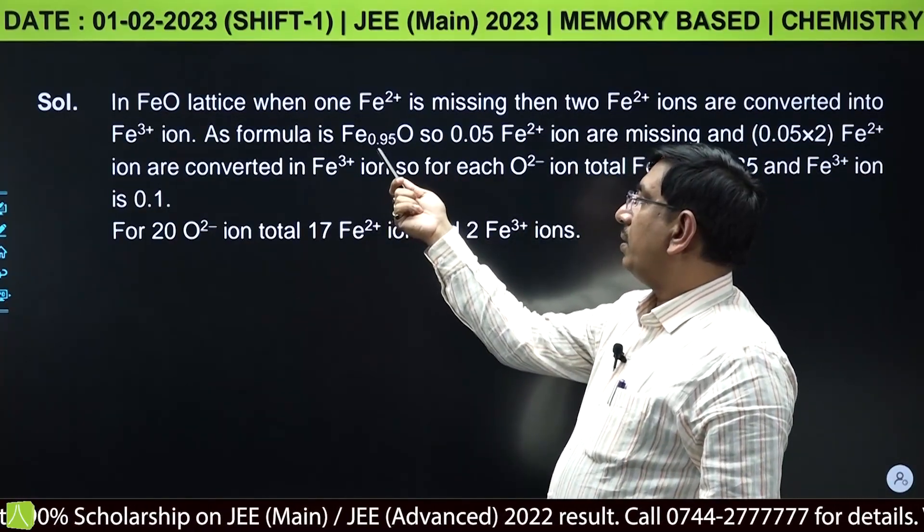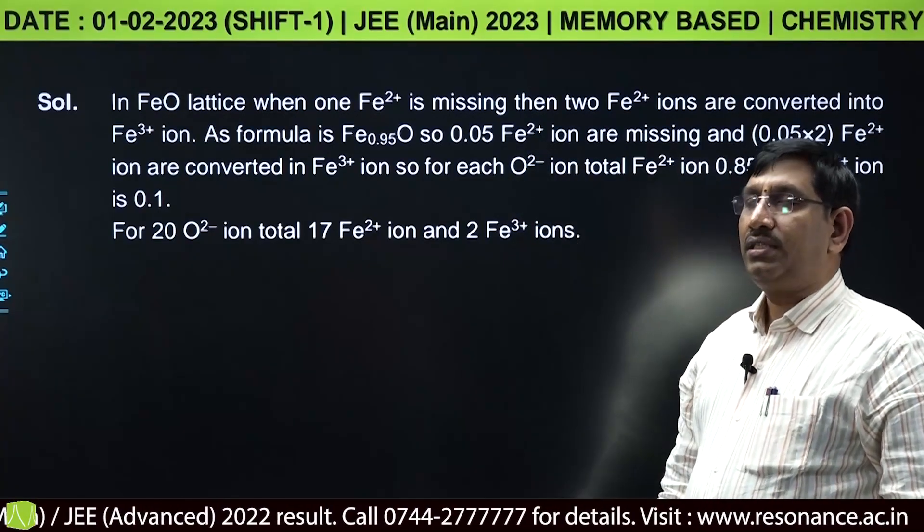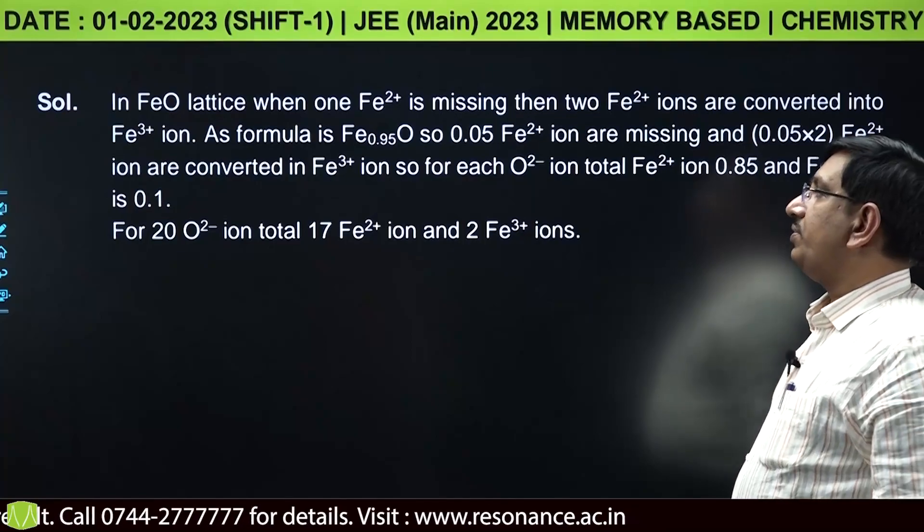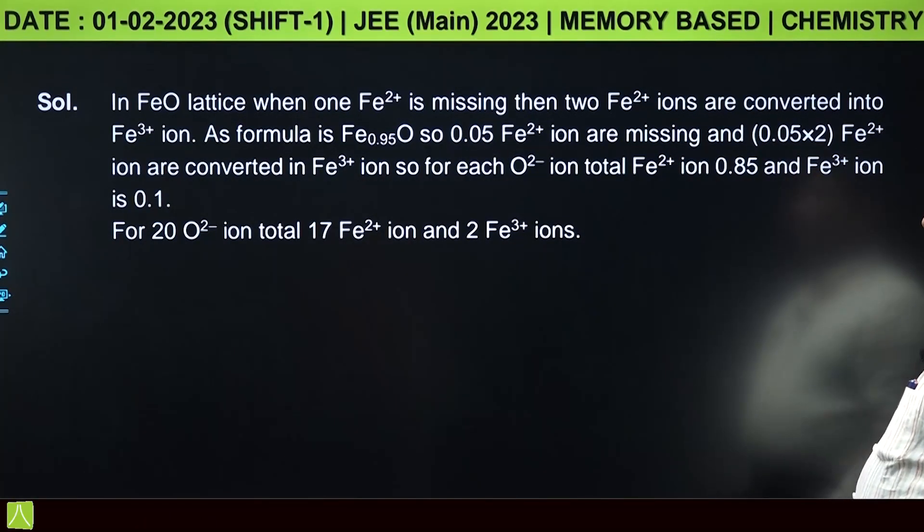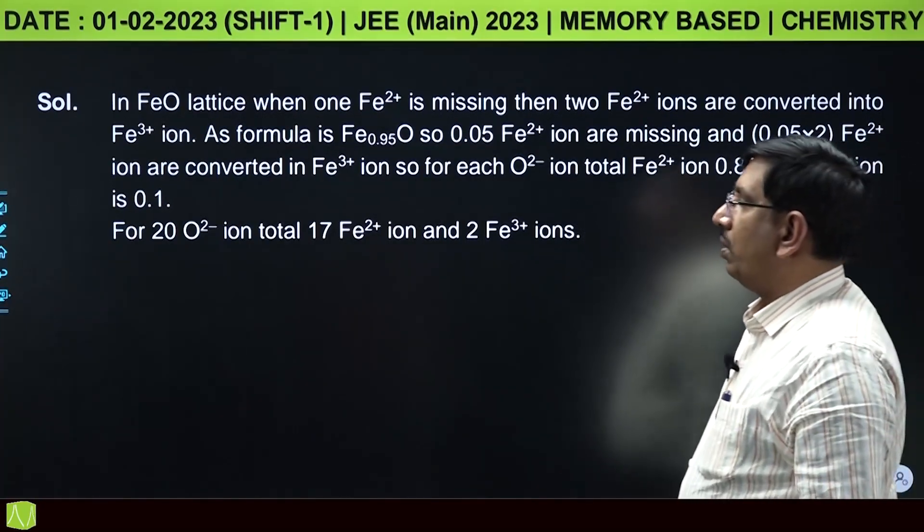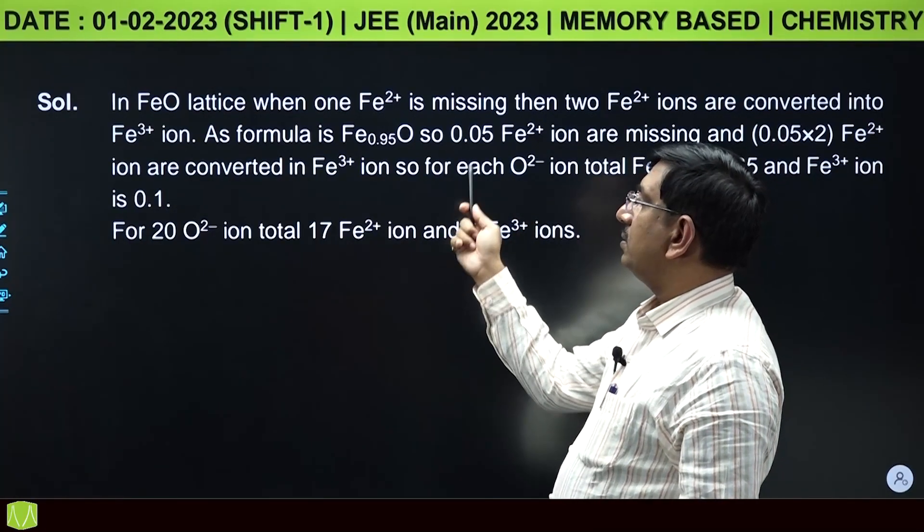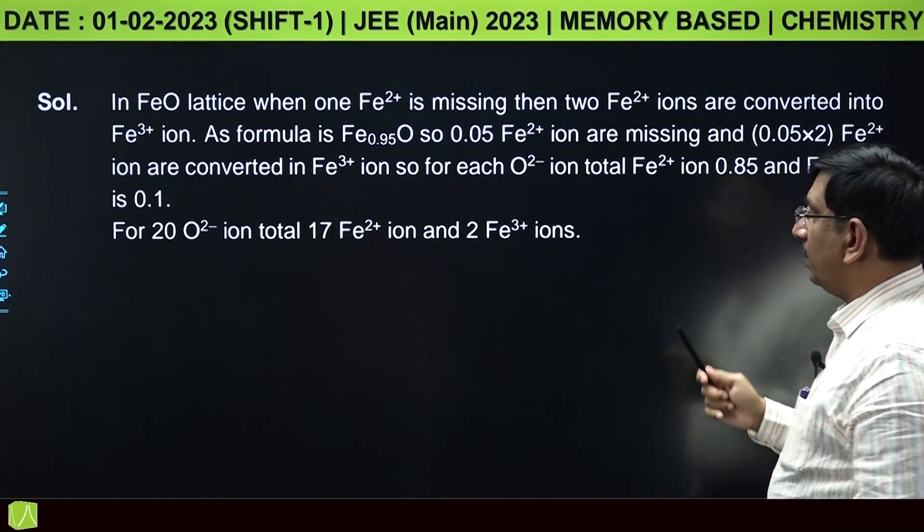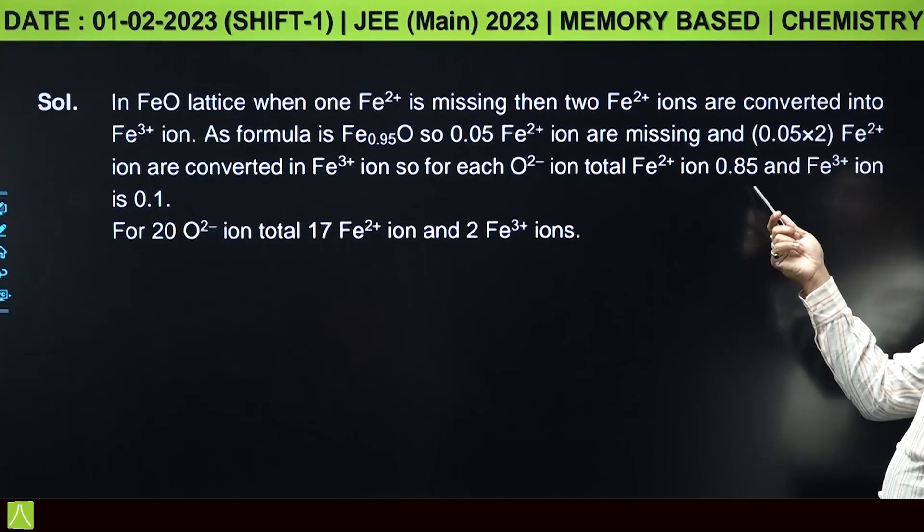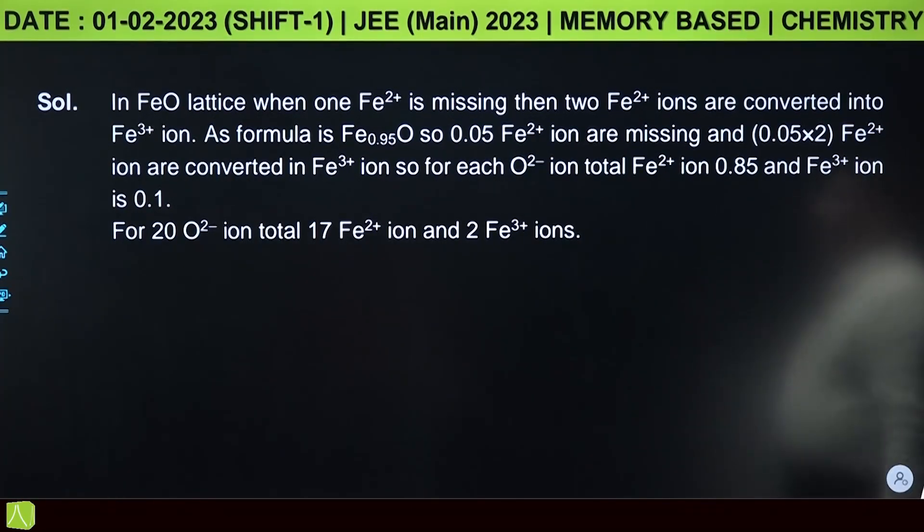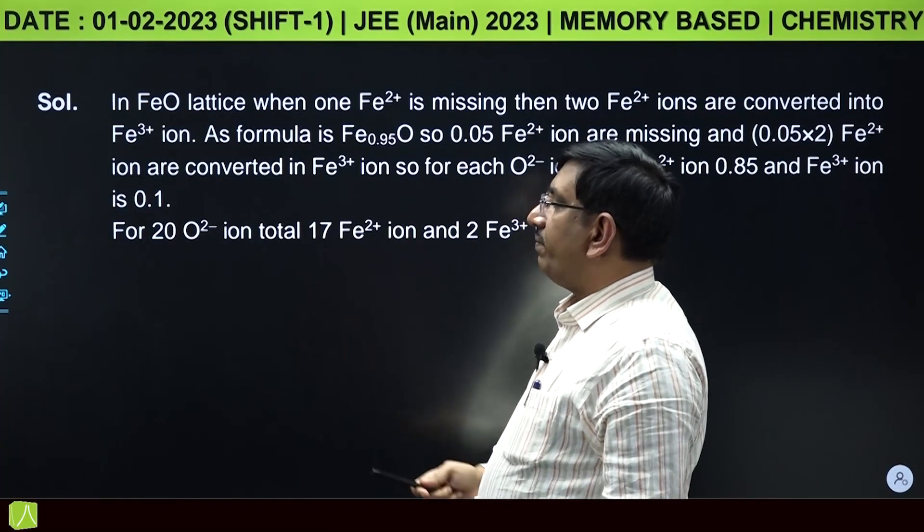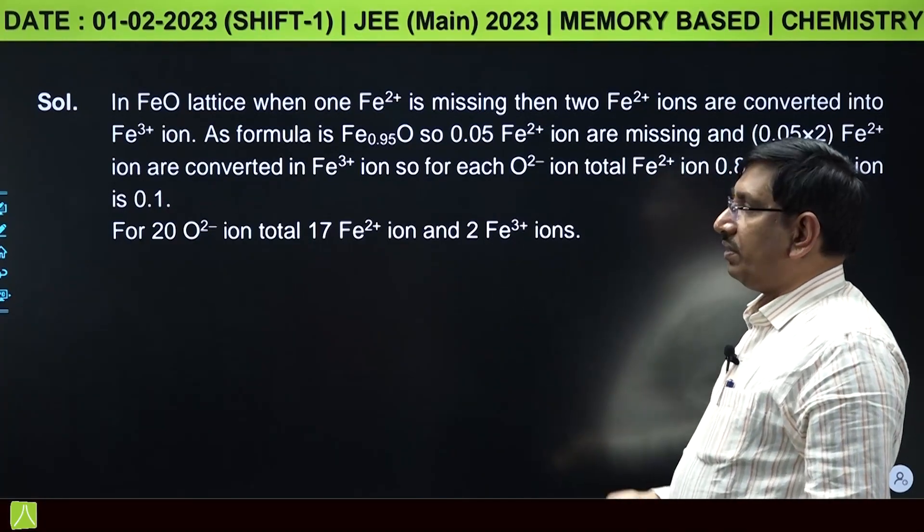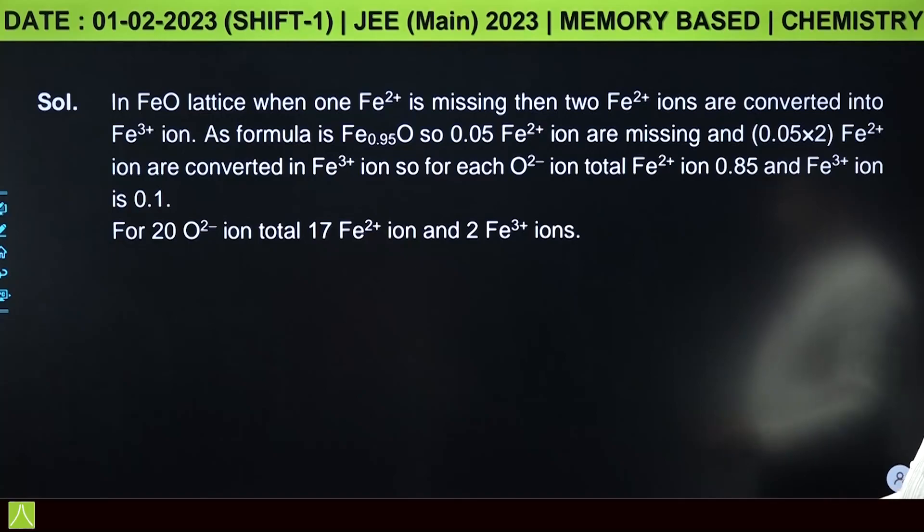If you observe O2-, Fe3+, and Fe2+ counts: Fe2+ is 0.85, Fe3+ is 0.1, and O is 1. For 20 O2- ions total, there will be 17 Fe2+ ions and 2 Fe3+ ions. Multiplying by 20: 20 O2-, 17 Fe2+, and 2 Fe3+.